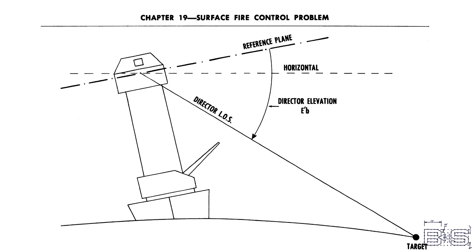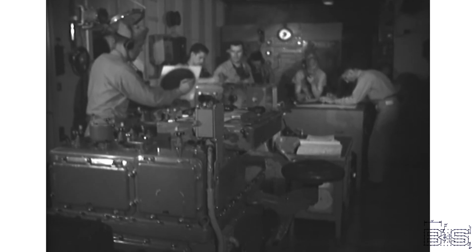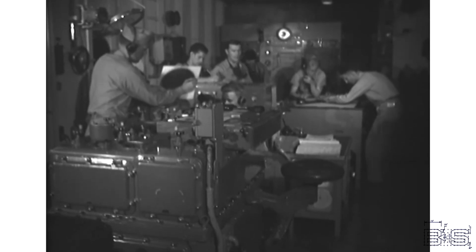But what if we can't see the target, such as the case with our 10,000 yard example? Then our only choice is to elevate the guns with respect to something called the horizontal plane. This is an imaginary plane tangent to the Earth's surface intersecting our ship at the water line. If some other mechanism can tell us the range and bearing, this will still work.